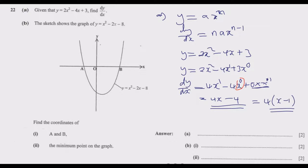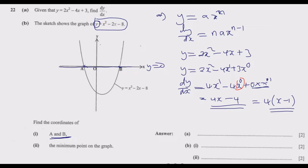Then we go to question b. The sketch shows the graph of y equals x squared minus 2x minus 8. Find the coordinates of A and B. To find these coordinates, we note that along the x-axis the value of y is equal to 0, so we substitute y with 0 in the function.